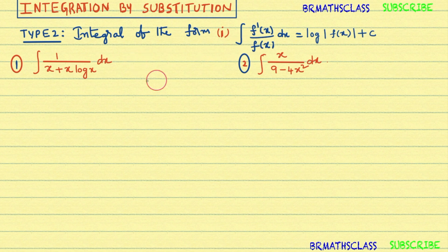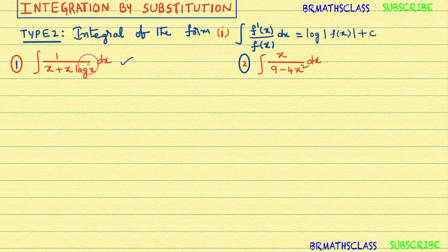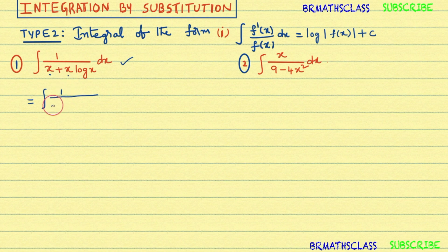We will try to understand with two problems. Observe this first problem. We can do it by substitution method, or write the answer directly with a little bit of simplification. I want to write the answer directly — I'll explain the substitution method at the end. That equals the integral of 1 divided by x(1 + log x) dx. In the denominator, take x common: it becomes x(1 + log x).